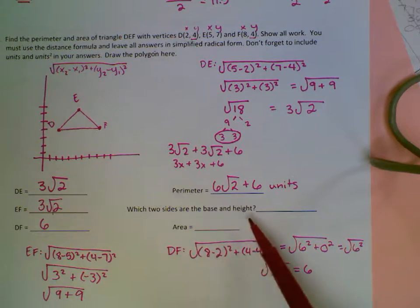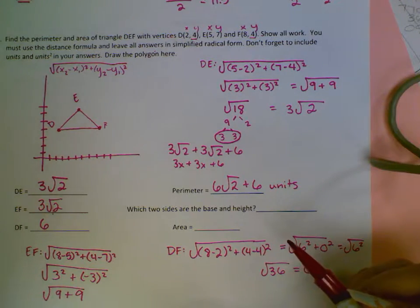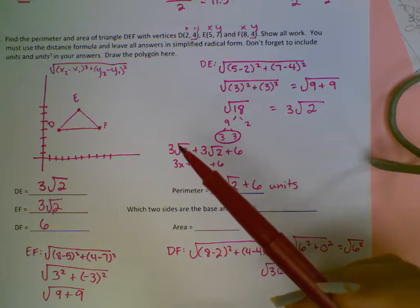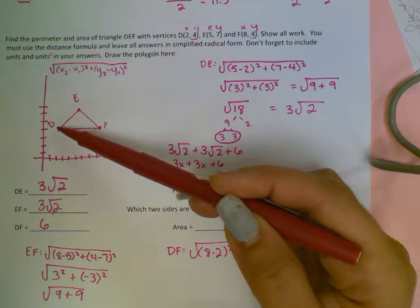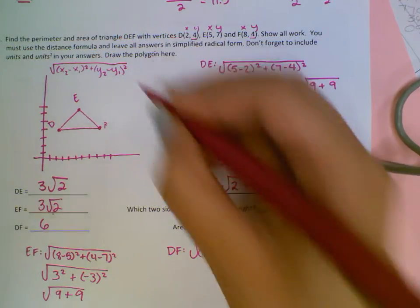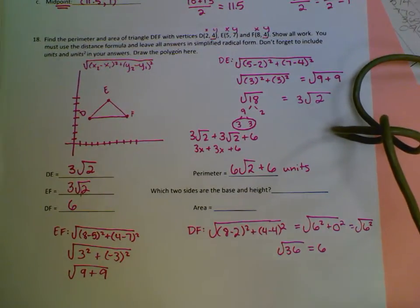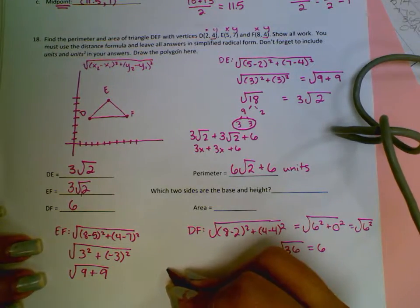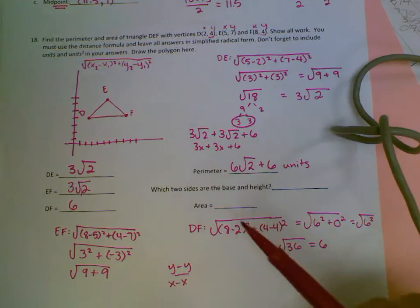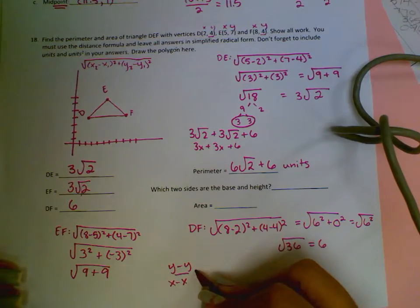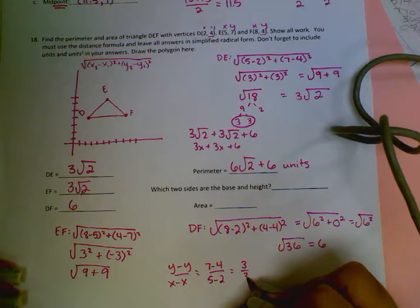Now we're saying which two sides are the base and the height. For the base and the height, they need to be perpendicular. So we need to check the slopes and make sure that they are opposite reciprocals, which means that they will form a right angle. To get from D to E, D is at 2, 4, and E is at 5, 7. So to get from 2... I'm sorry, let me zoom out a little bit. To get the slopes, we'll do y minus y over x minus x. So that will give us our rise over our run. So if we do 7 minus 4 over 5 minus 2, we'll get 3 over 3, which is equal to 1.